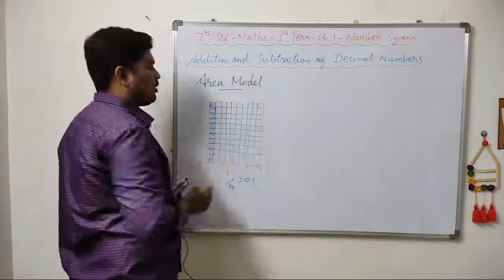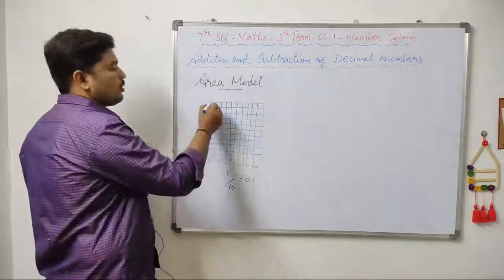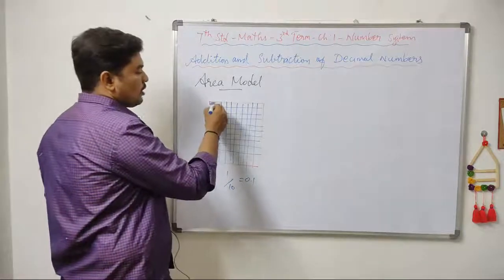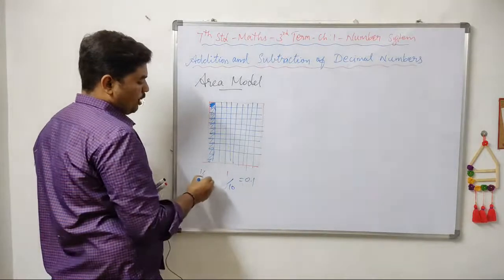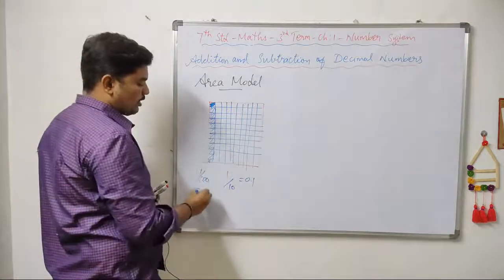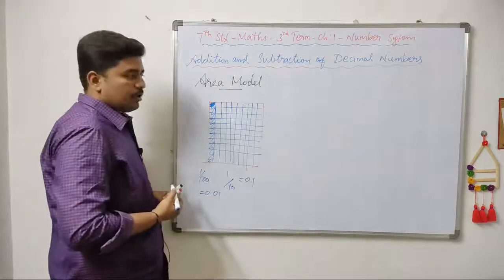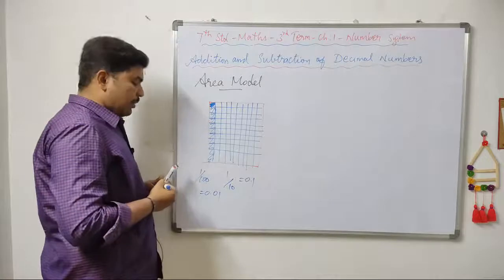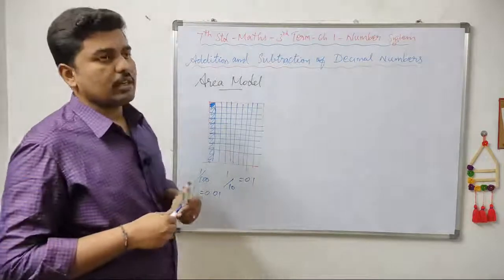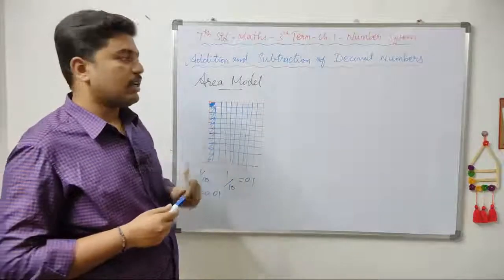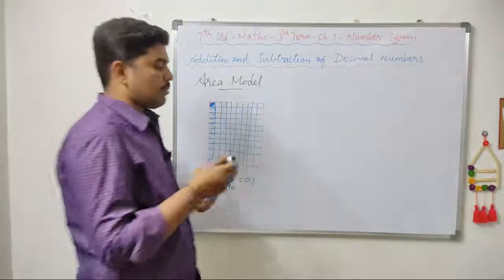This is 1 by 10. This is the grid model. In this box, 1 by 100 — total 100 squares is 0.01. Now we have to put a decimal number in the place. We can use the area model. We can use the example problem.